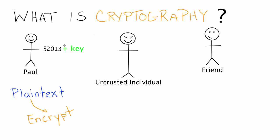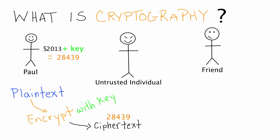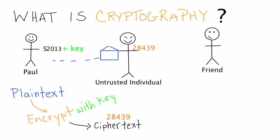We can think of the key as mathematical operations that we can perform on the numerical value of Paul's message. After applying the key to this numerical value, we end up with a new numerical value, which is known as ciphertext. So now if Paul puts his ciphertext in an envelope and sends the envelope to his friend, Paul won't have to worry about somebody in the middle discovering the secret message. If somebody in the middle discovers the message, they won't be able to decrypt the message without a proper key.